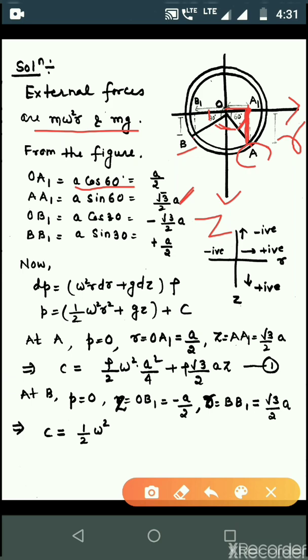Similarly, at point B the value of r will be OB1, but here the value is taken as negative because imagine this is the x-axis, so left-hand side x becomes negative. Then we replace x with r-axis since variation is in r. So left-hand side the value becomes negative. BB1 value is a sin 30, which equals a by 2.